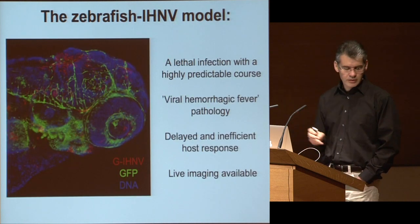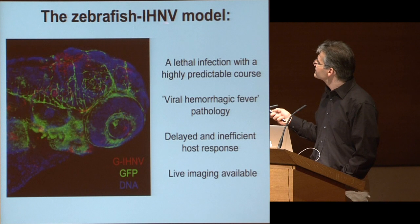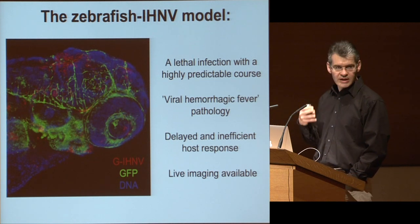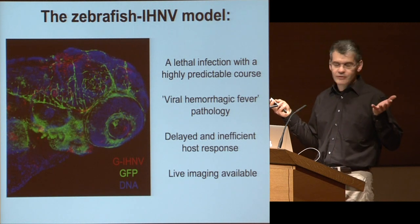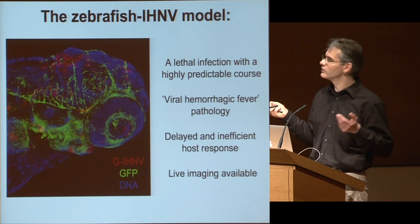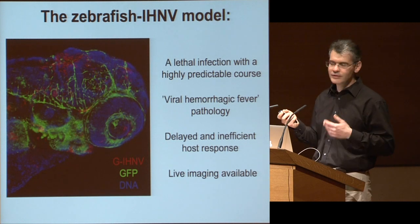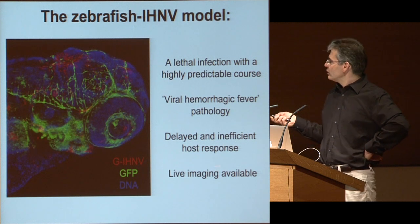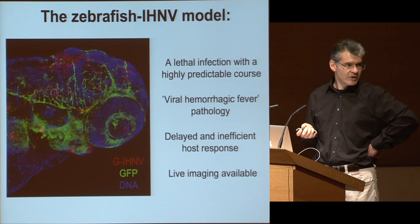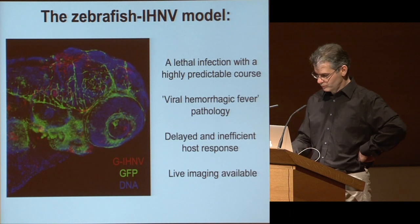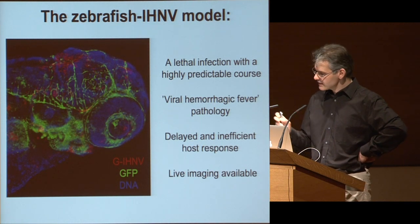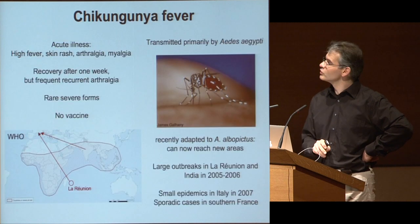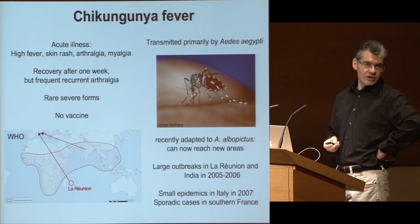To summarize the IHNV part: we have a model of a lethal, highly predictable infection — a hemorrhagic disease, like a viral hemorrhagic fever — with a delayed and inefficient host response. We also have tools for performing live imaging of infected cells. This has been published last year. I'm now going to share unpublished data on a second virus: chikungunya.